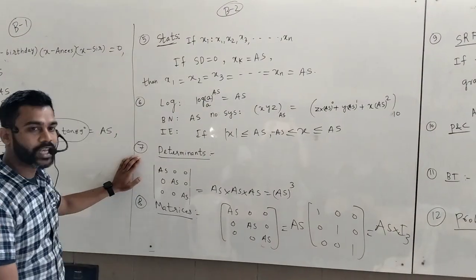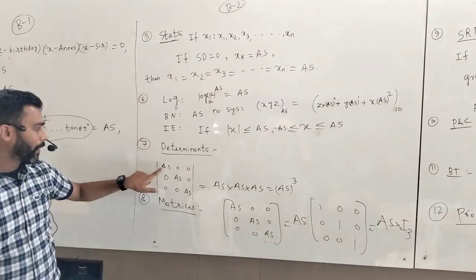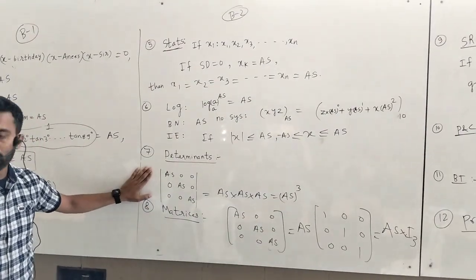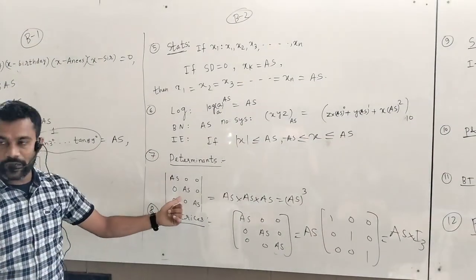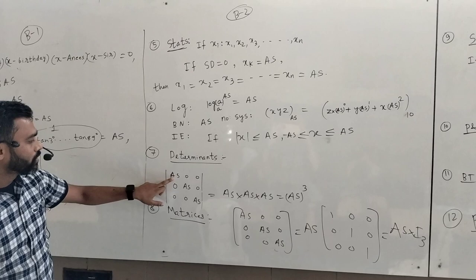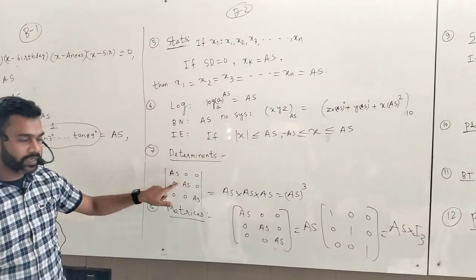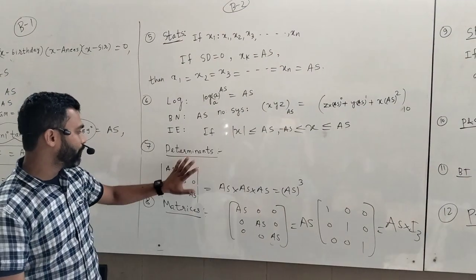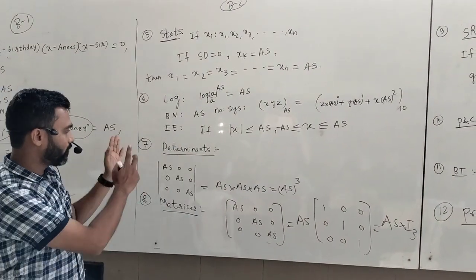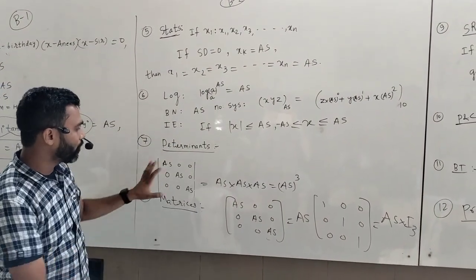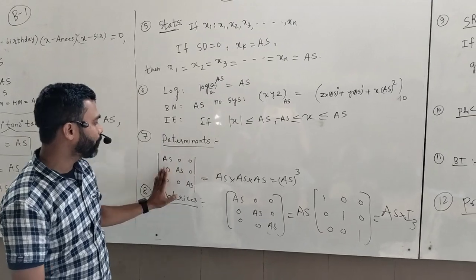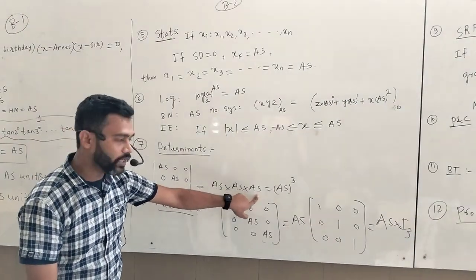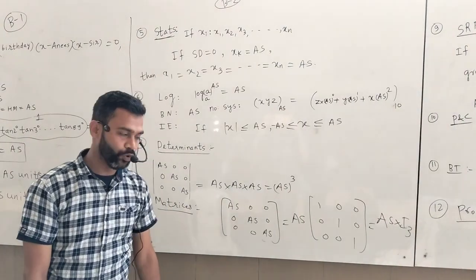The seventh chapter is determinants. This is a diagonal matrix. The diagonal elements will be Anisar, Anisar, Anisar. If we find the determinant of this matrix, it will be the product of all diagonal elements — that is Anisar × Anisar × Anisar, which is Anisar cubed.